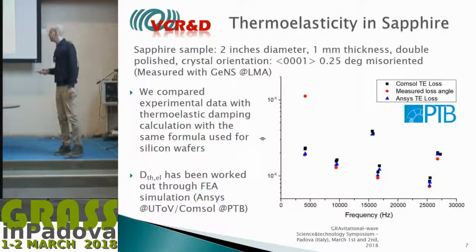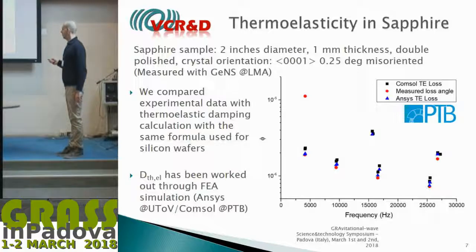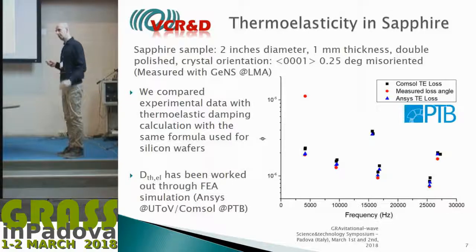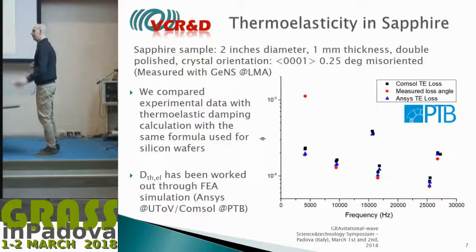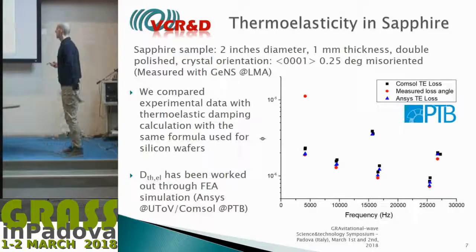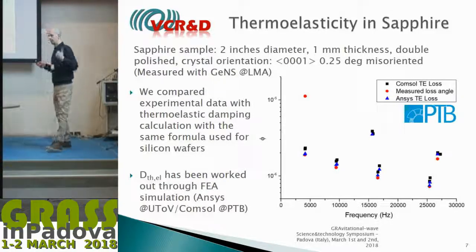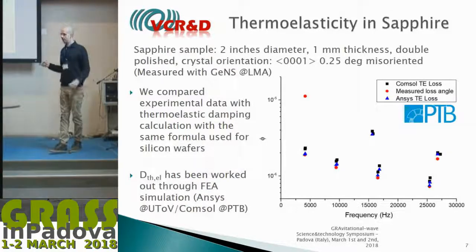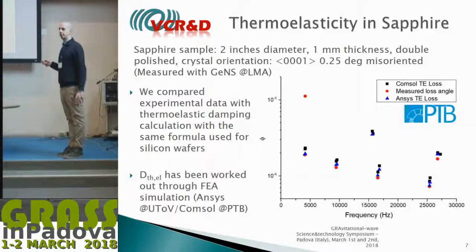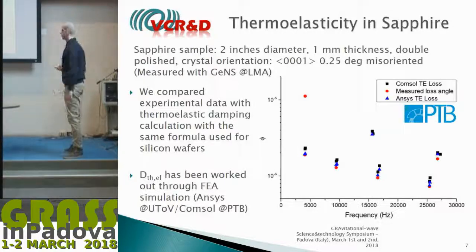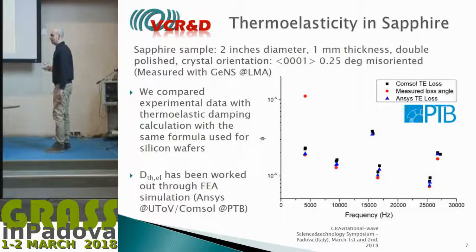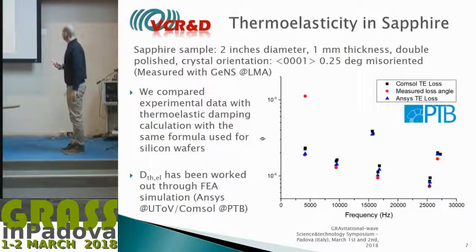The same effect is seen with sapphire. We have experimental data—the red dots—for thermoelastic loss damping in a sapphire disk, compared with the computation of the expected thermoelastic damping according to the formula, using finite element analysis to work out the dilution factor. The same computation was also done at PTB using the COMSOL tool, and the data are well-fitted by this computation.